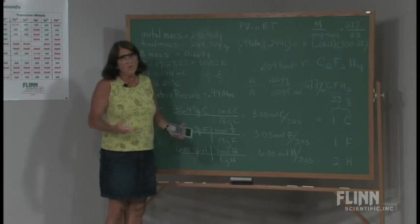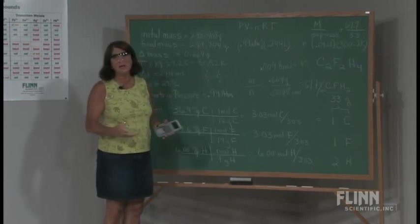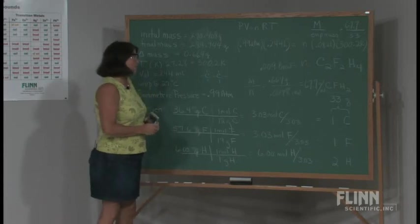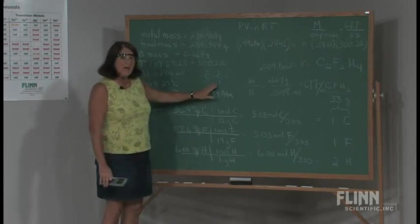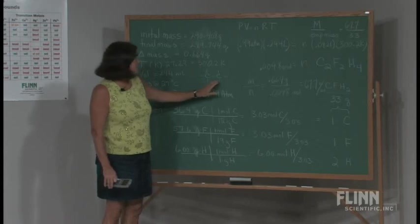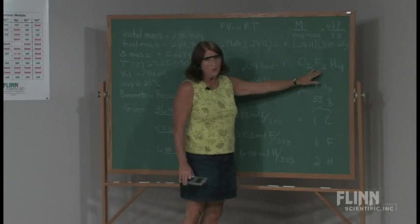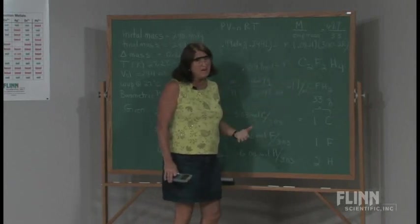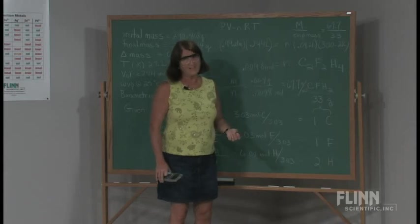Now, I really don't know where the fluorines and the hydrogens would be located from the work that I've done, but I could still name this compound. It would be an ethane derivative because of the two carbons. It would have two fluorines. It would be a difluoroethane of some sort. Let's take a look.